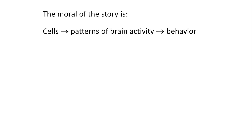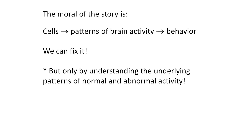The moral of this story is that certain cells generate patterns of activity in the brain, and those patterns are important for both normal and abnormal behavior. Yes, we can fix abnormal behaviors, but we have to understand the underlying patterns of normal and abnormal activity to do so. And crucially, if we tried to stimulate these neurons at different frequencies — too slow or too fast, not at gamma — it didn't work. We had to use the right pattern of activity to fix the gamma oscillations and get these mice learning again.